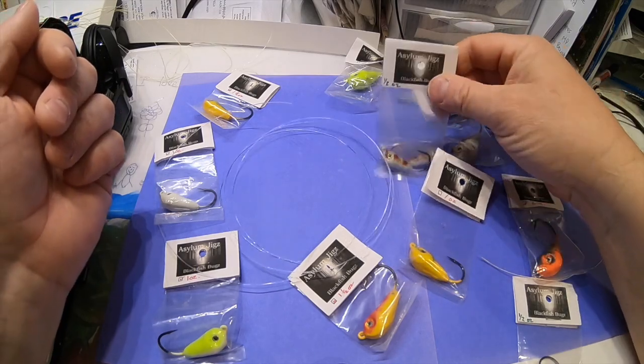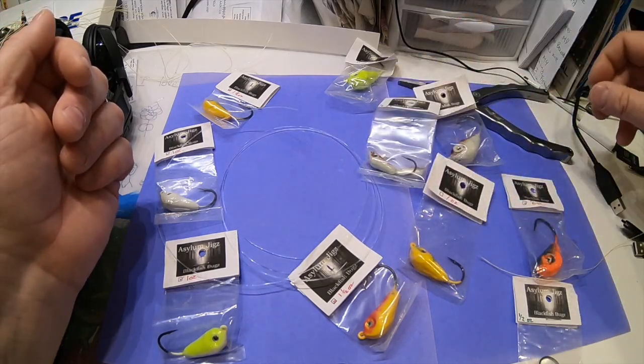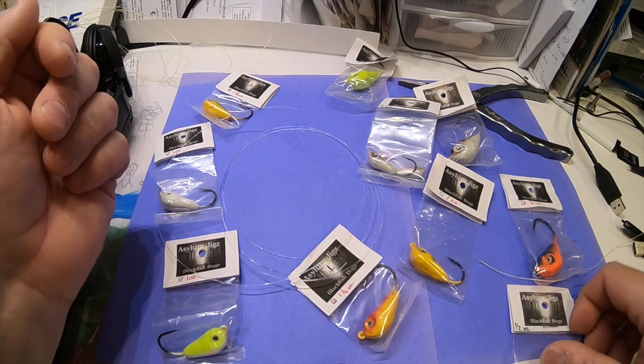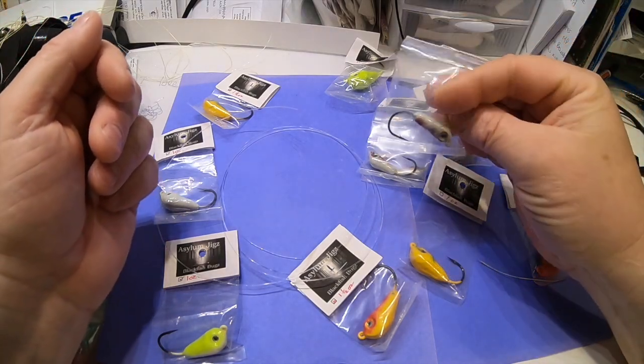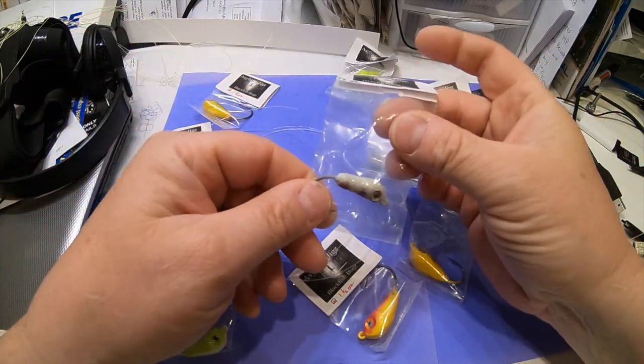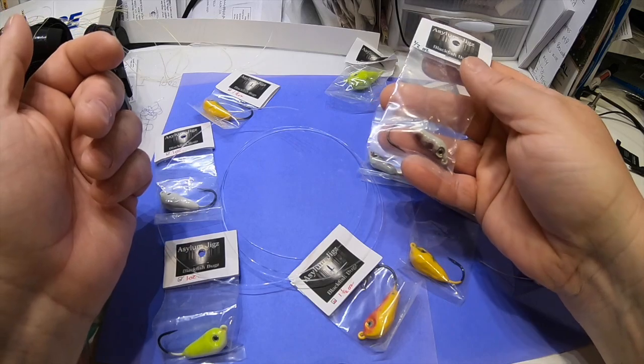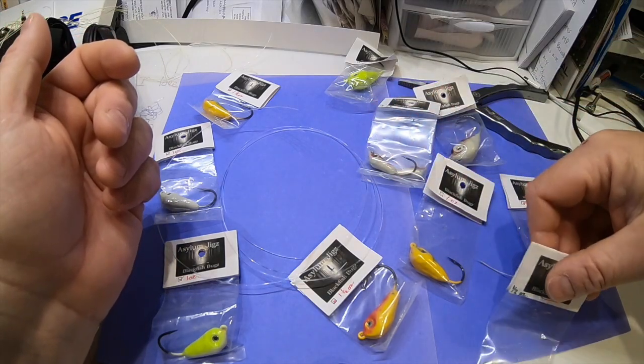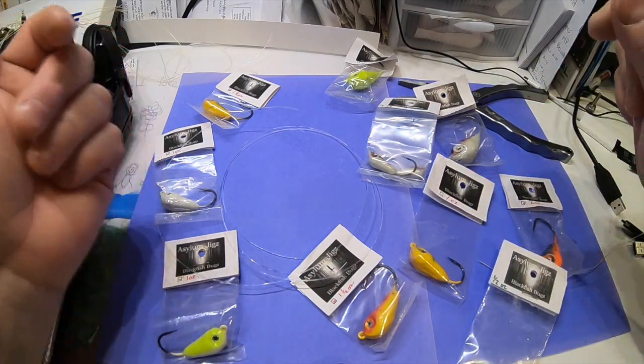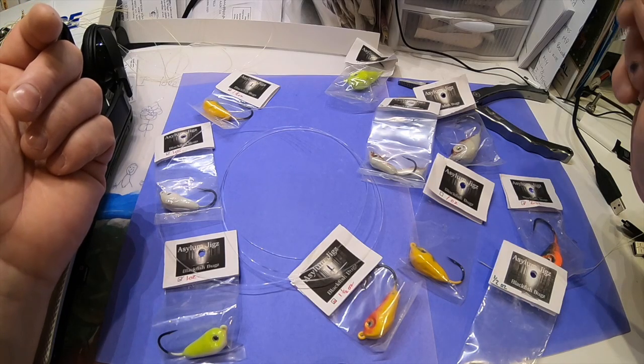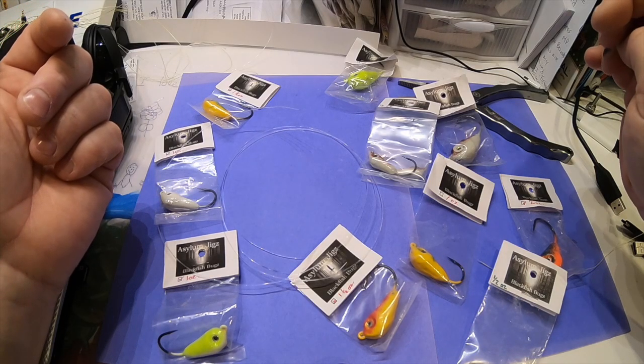We fish very light, so at that point she started making for me a half ounce, and I have as small as like a third of an ounce, which is slightly smaller than this half ounce right here.